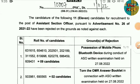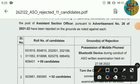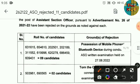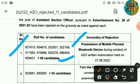The roll numbers of candidates will be checked. Roll number 631615 — if you have 9 candidates, the reason is possession of mobile phone and Bluetooth device during the conduct of the ASO Exam.